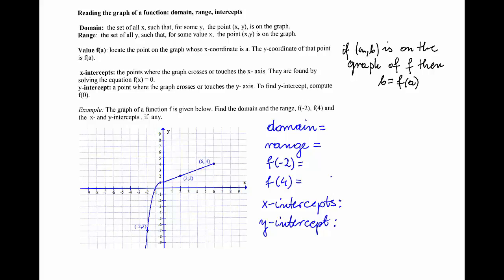If you look at that movement — as I move through the graph — I can see that the values of x will change from minus infinity to the x-coordinate of the point (6, 4), which is 6.